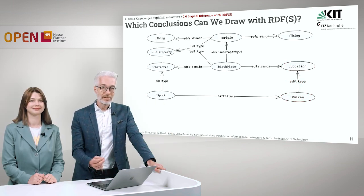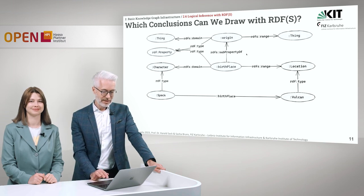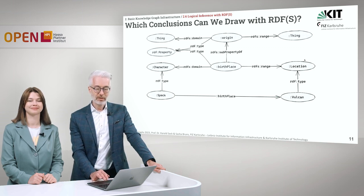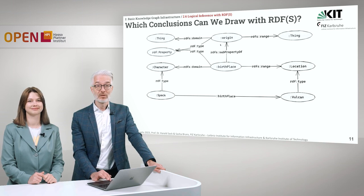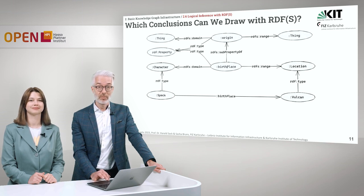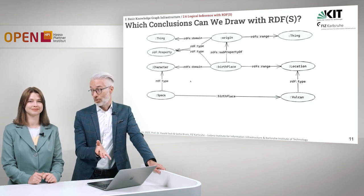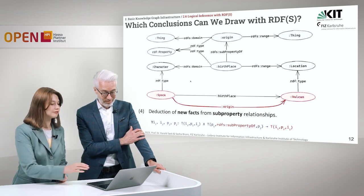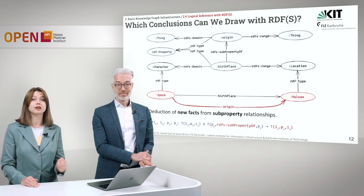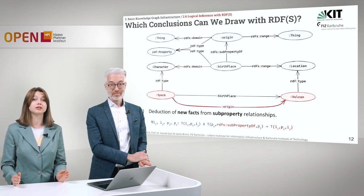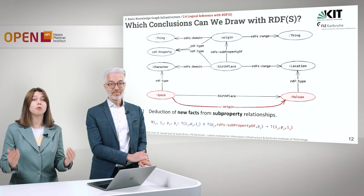Let's have a look at our last example. Here at the bottom we again have Spock, birthplace Vulcan, with birthplace having a domain character and the range location. What is new here is exactly origin, which birthplace is a subproperty of. So birthplace is a special case of origin, and origin connects anything with anything because not only a person can have an origin but many things. According to the definition of subproperty, we can say that Spock and Vulcan are not just connected by birthplace — Vulcan is also an origin of Spock.